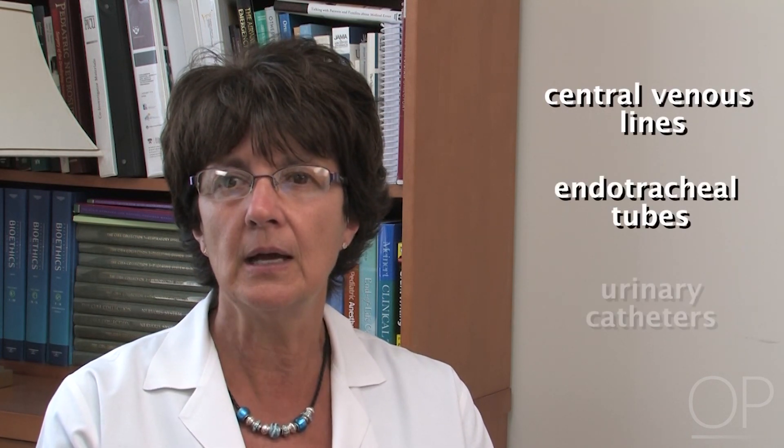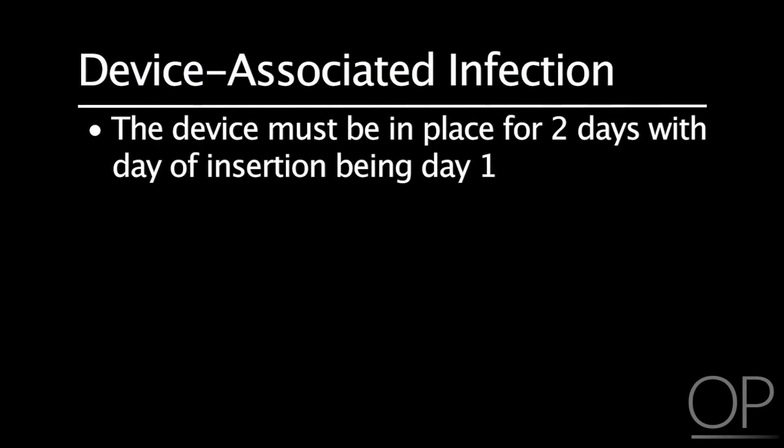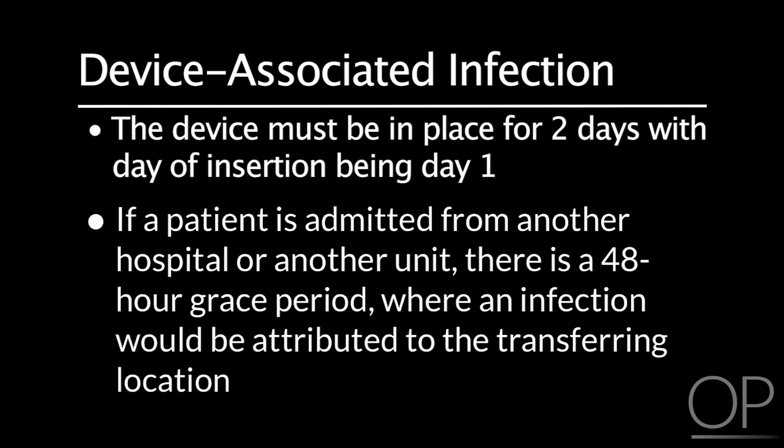Examples of indwelling catheters are central venous lines, endotracheal tubes, and urinary catheters. The device must be in place for two days, with the day of insertion being day one, for an infection to be considered device associated. However, if a patient is admitted from another hospital or another unit with an indwelling catheter in place, there is a 48-hour grace period where an infection would be attributed to the transferring location.